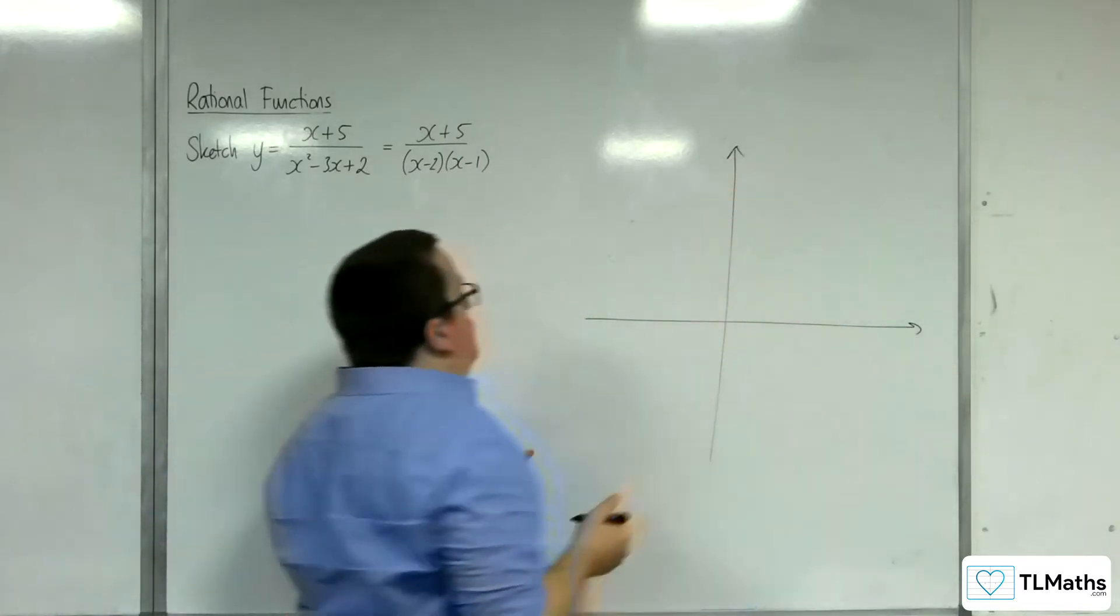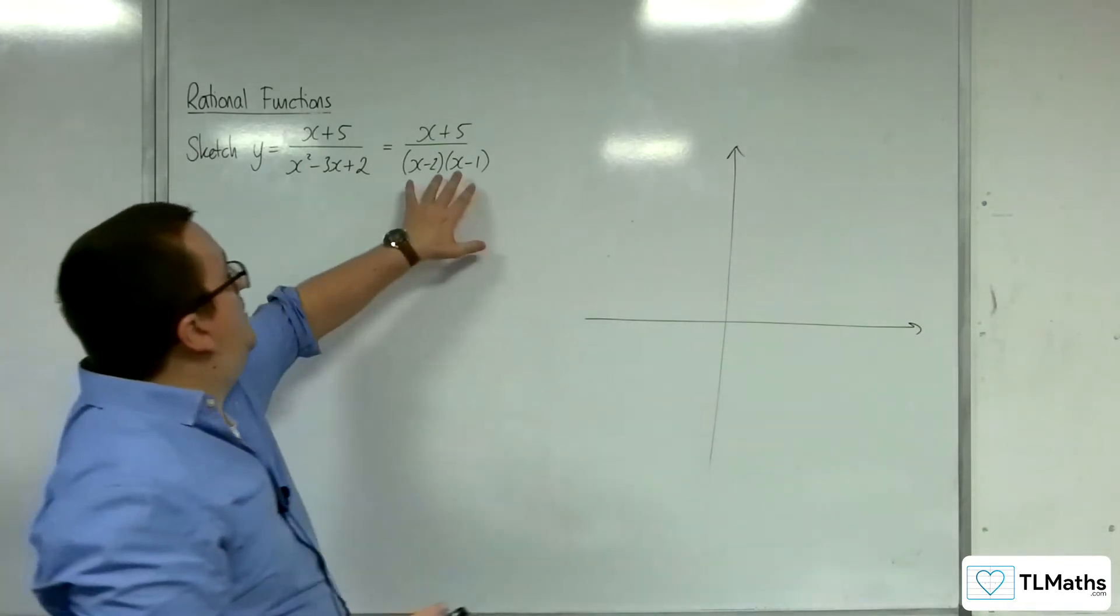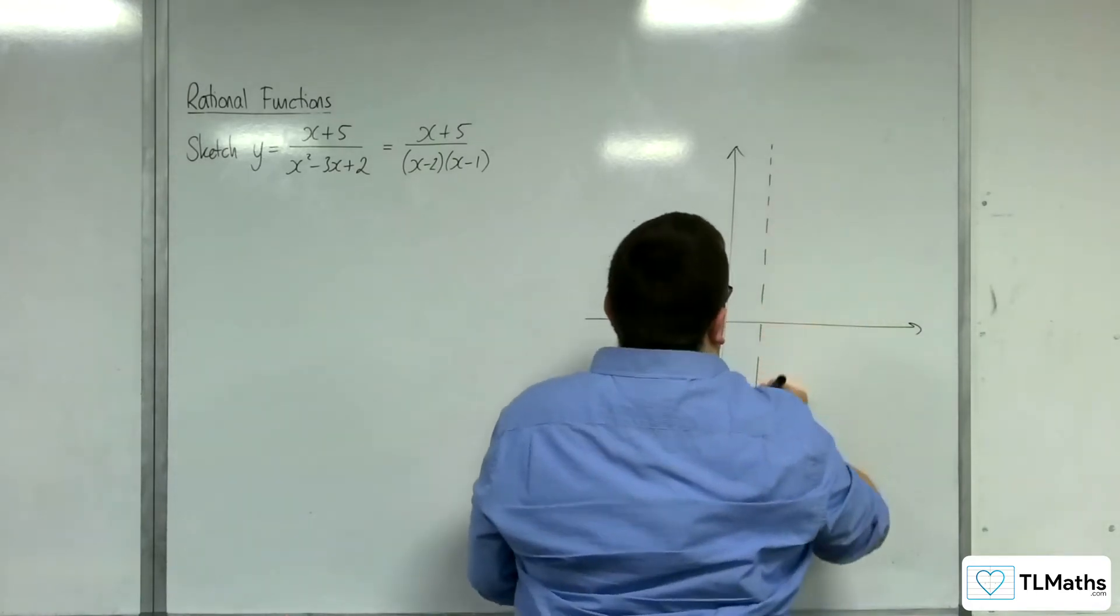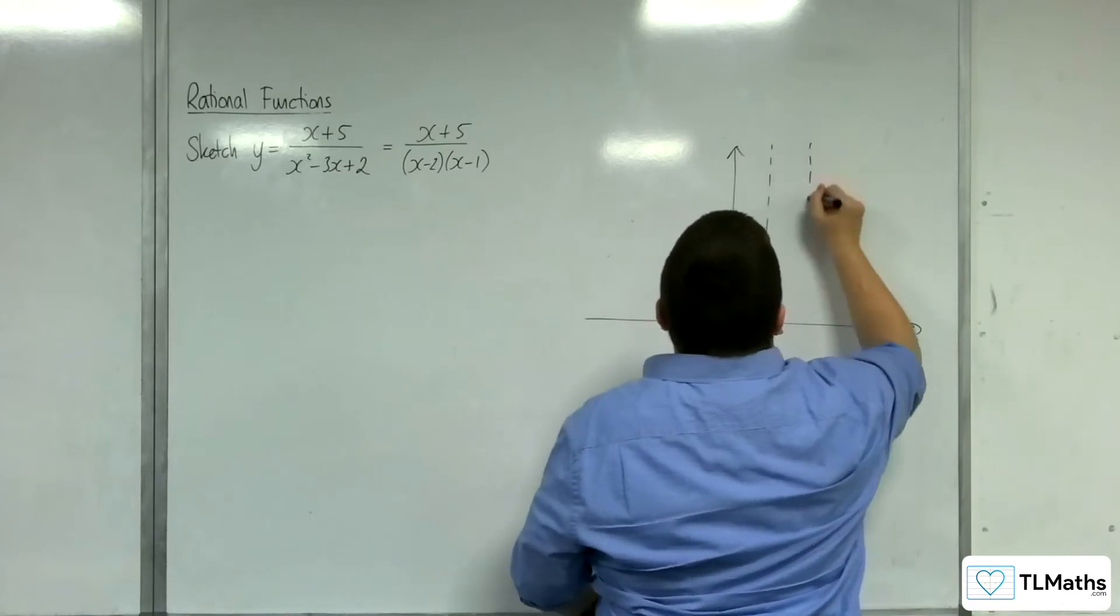Okay, right, vertical asymptotes first then, so that's when the denominator is 0. So that would be at 1 and 2. So x equals 1 and x equals 2.